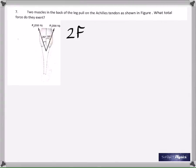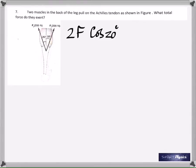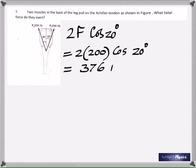Two muscles in the back of the leg pull on the Achilles tendon. What total force do they exert? Since there are two muscles, the total is 2F — F from each. But you take the component in the relevant direction, which becomes 2F cosine 20. With F equal to 200 Newtons, the result is 376 Newtons.